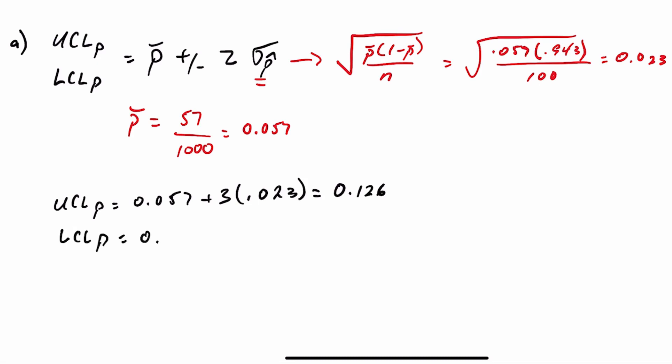The lower control limit is 0.057 minus 3 times 0.023. And that will actually give you a negative 0.012, but you can't have a negative, because it's impossible to have a proportion of defectives less than 0. So that means our lower control limit is 0.